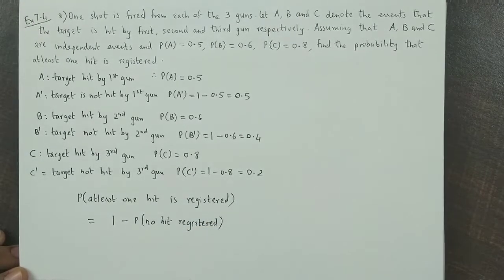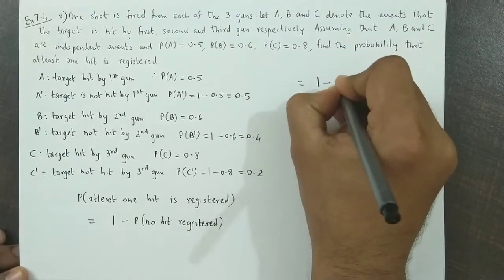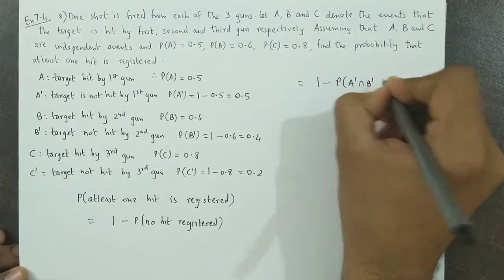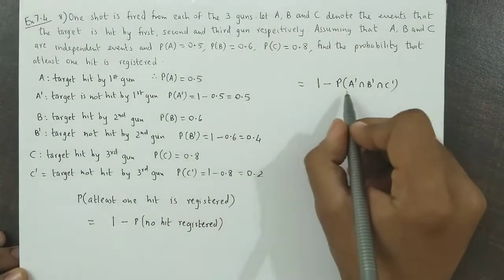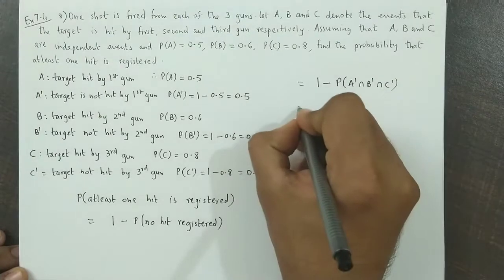So the value is 1 minus P(A complement intersection B complement intersection C complement), meaning the target is not hit by any of the three guns.